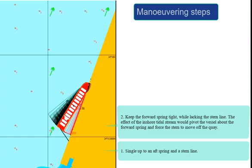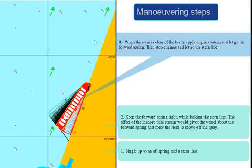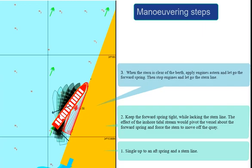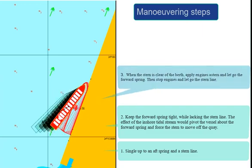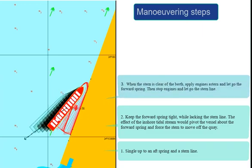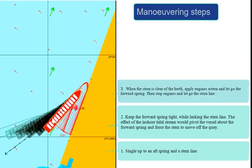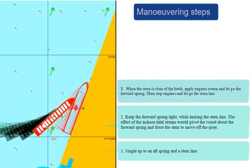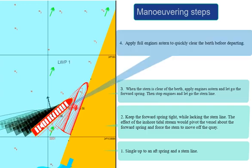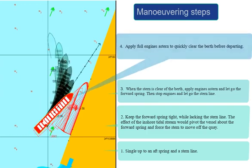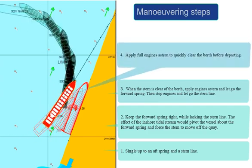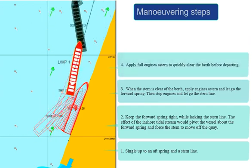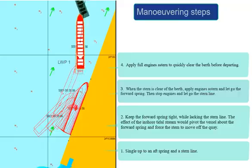Step 3: When the stern is clear of the berth, apply engines astern and let go the forward spring. Then stop engines and let go the stern line. Step 4: Apply full engines astern to quickly clear the berth before departing.